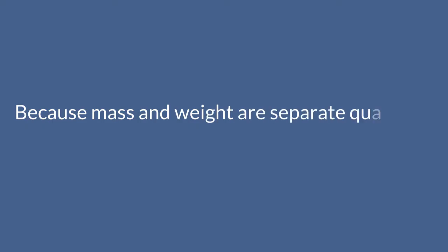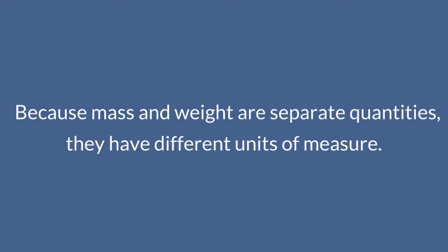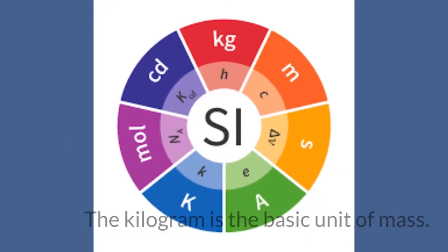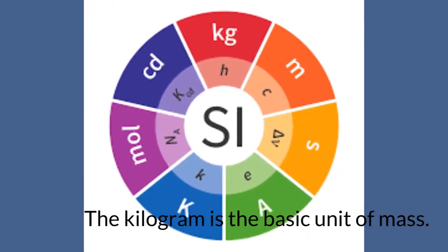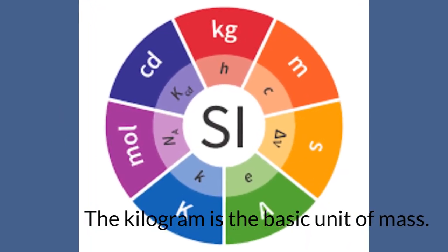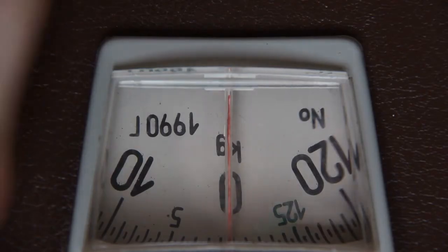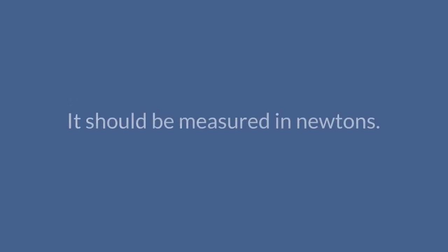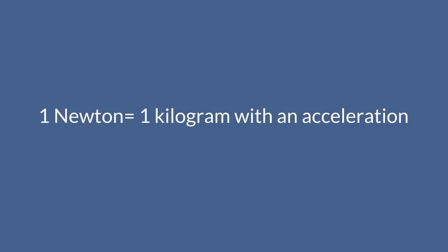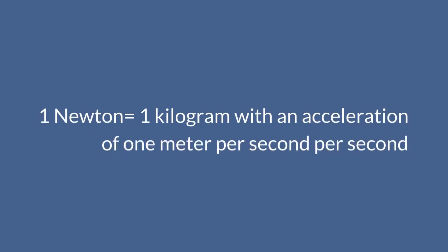Because mass and weight are separate quantities, they have different units of measure. In the international system of units, the kilogram is the basic unit of mass, and even though we usually talk about weight in kilograms, strictly speaking it should be measured in newtons — the units of force. 1 newton is equal to 1 kilogram with an acceleration of 1 meter per second per second.